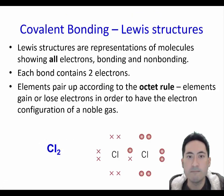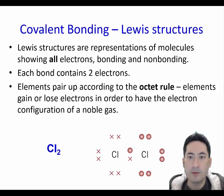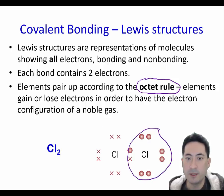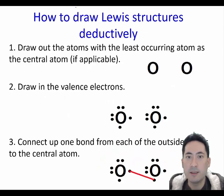First of all, Lewis structures. Now Lewis structures follow an octet rule, which means they try to look like a noble gas having a full electron configuration. So here you can see if you count them up, this chlorine here has 8 electrons and this chlorine here also has 8 electrons which has a full valence shell. Now how do we work out these Lewis structures?